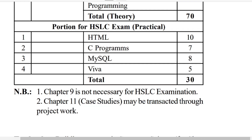Most of the time the school itself does not set the paper. For preboard and board exams, the school itself decides what to give you. C programming will come for 7 marks, and MySQL — creating a database and writing a few queries — will come for 8 marks. So the total comes to 25, and with oral 5 marks, that is 30 marks.